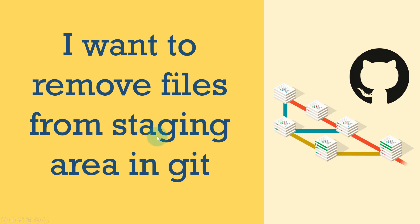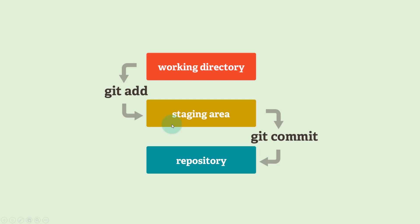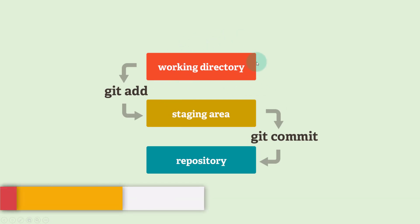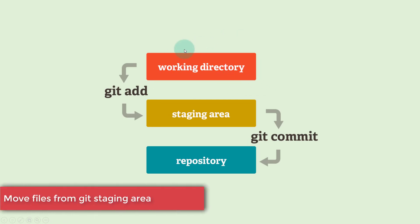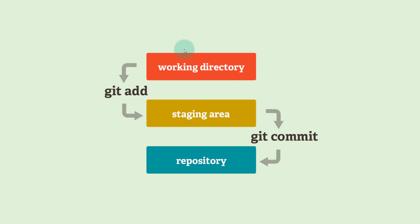To understand this concept, you need to understand the staging area. Suppose you are working on a project and you have a local directory on which you are working — you are making some changes to the files, you are committing, then you are deleting anything, whatever you are doing. So that is your working directory.